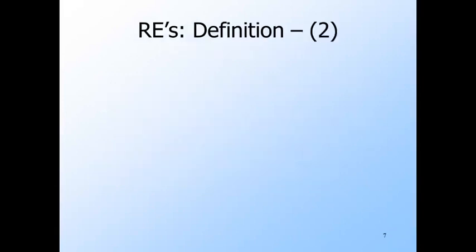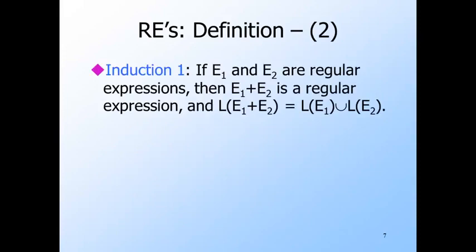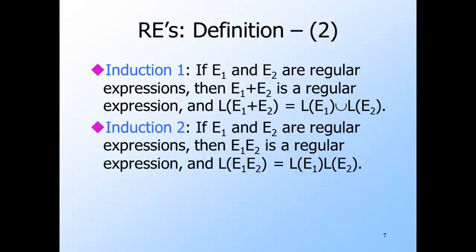The inductive part of the definition has three parts. First, we can connect any two regular expressions by a plus sign, which represents set union: the language of E1 plus E2 is the union of the languages that E1 and E2 denote. The second part involves concatenation: we write one regular expression next to another to denote the concatenation of their languages. We sometimes need parentheses to group expressions properly, so in some circumstances we put parentheses around E1 and/or E2.